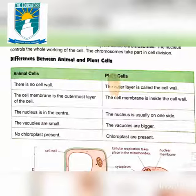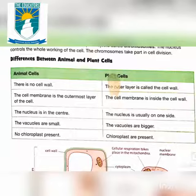Good morning students, Grade 6 Science. Differentiate between animal and plant cells. Animal cells: there is no cell wall.